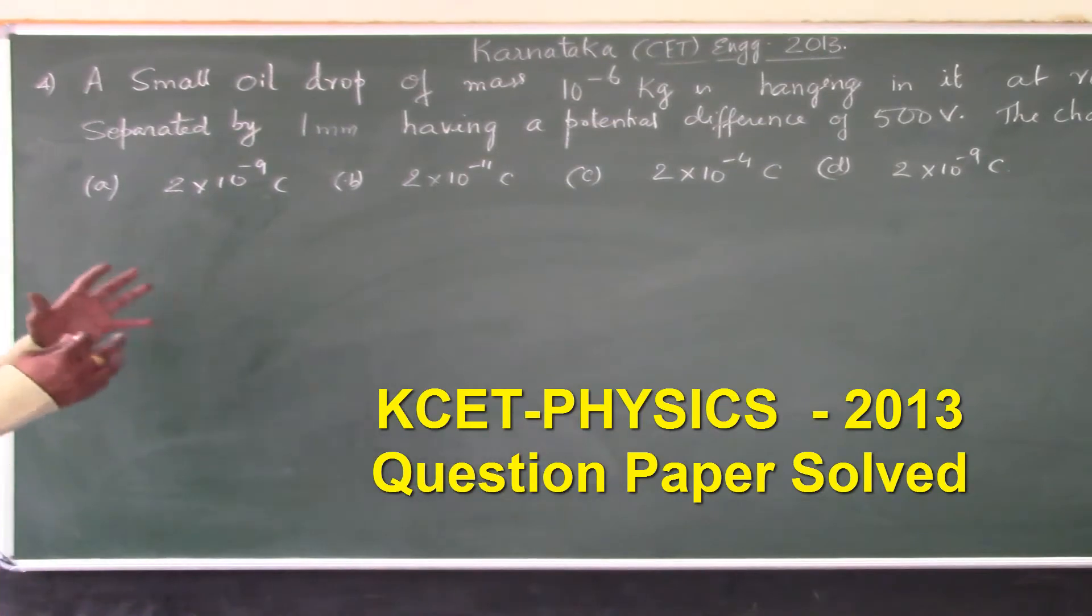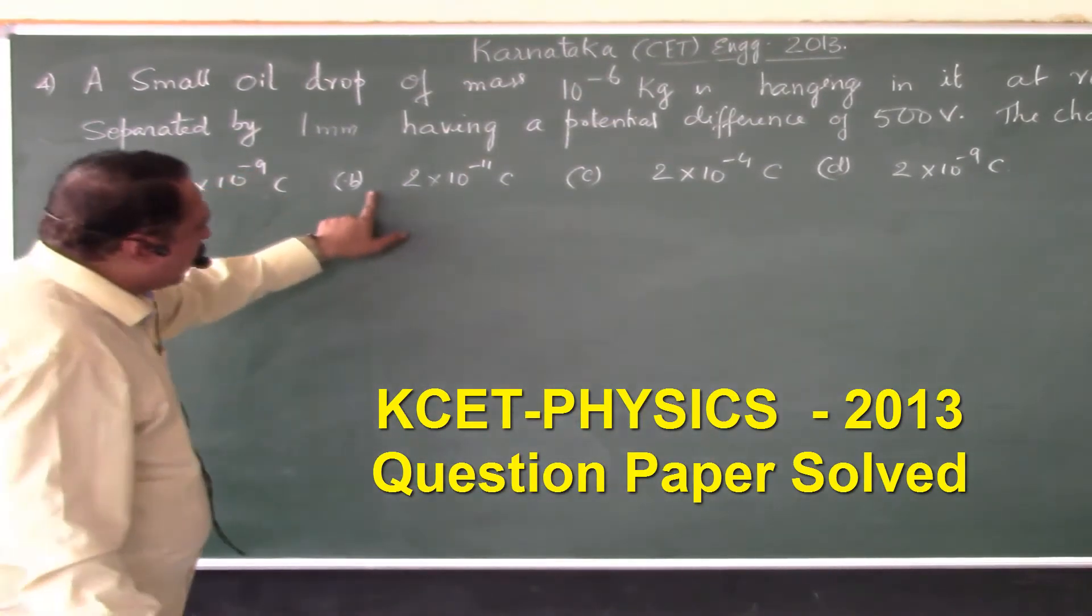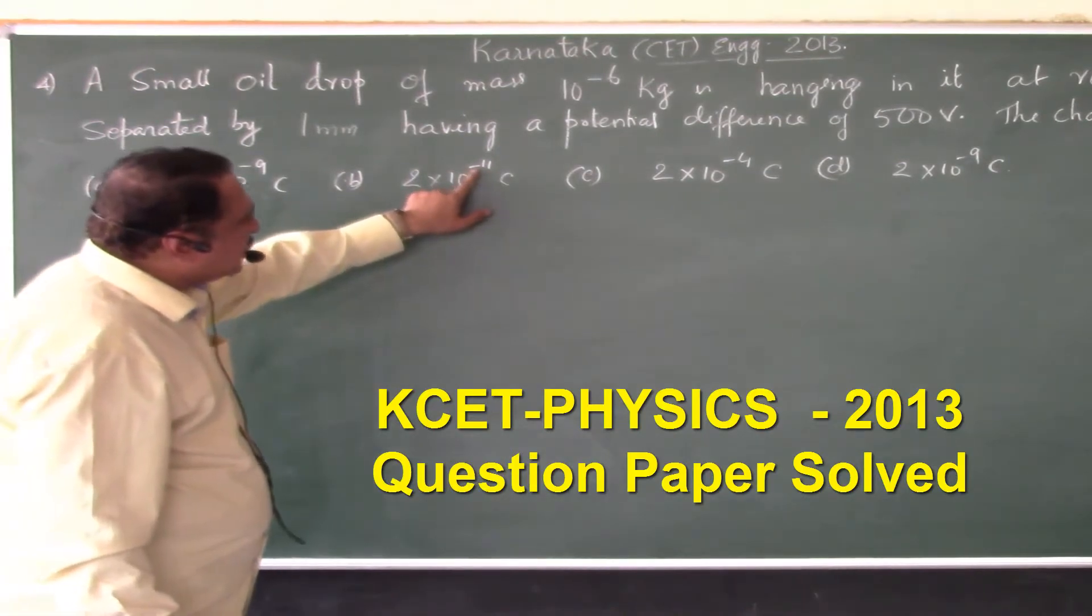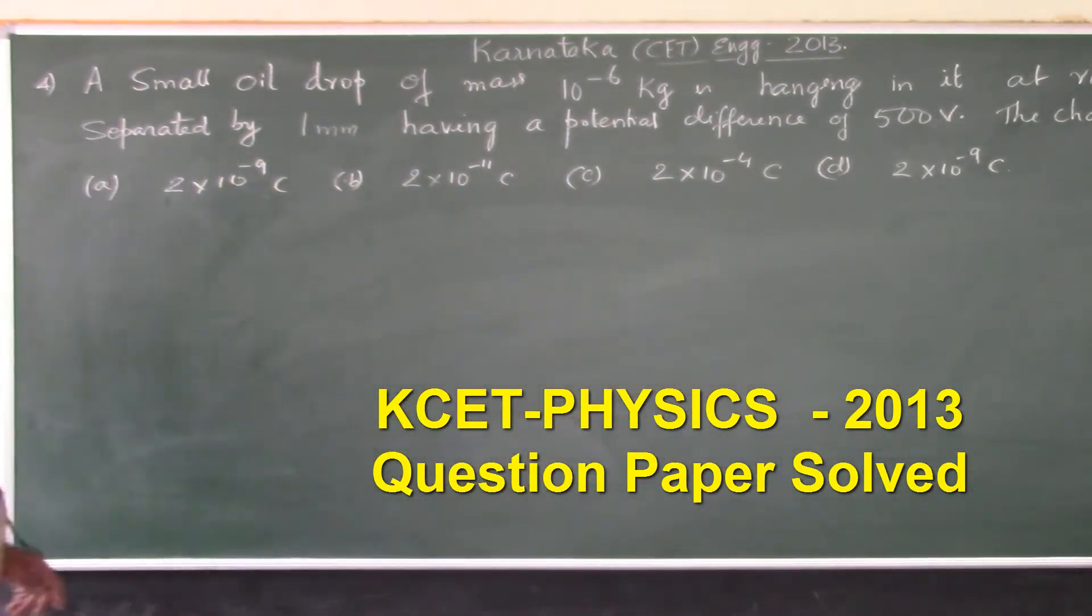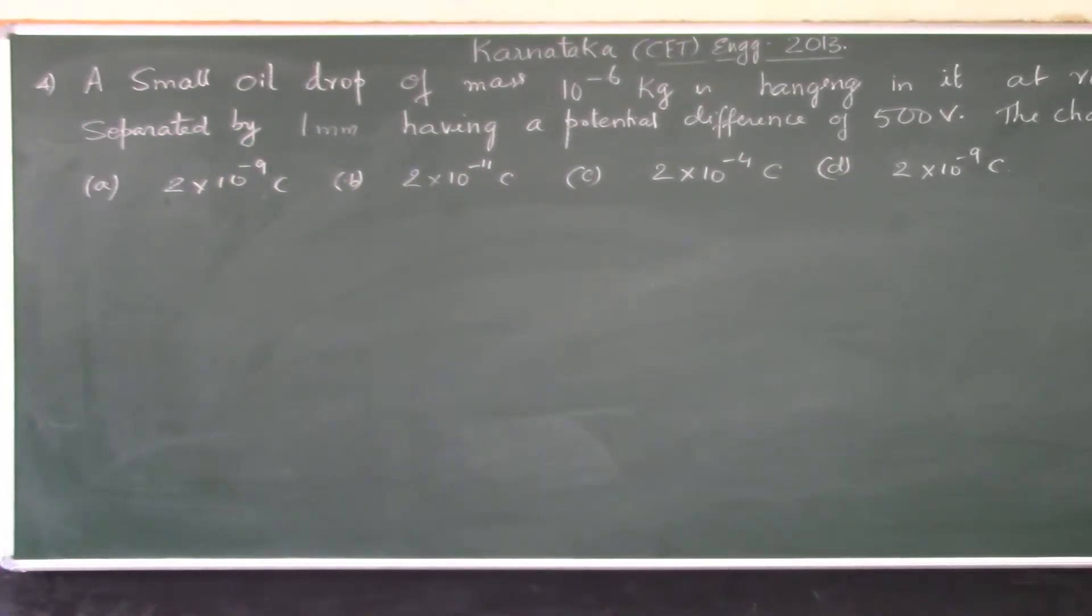The charge on the drop is: four options. A) 2 into 10 power minus 9 coulomb, option B) 2 into 10 power minus 11 coulomb, C) 2 into 10 to the power of minus 4 coulomb, D) 2 into 10 to the power of minus 9 coulomb.